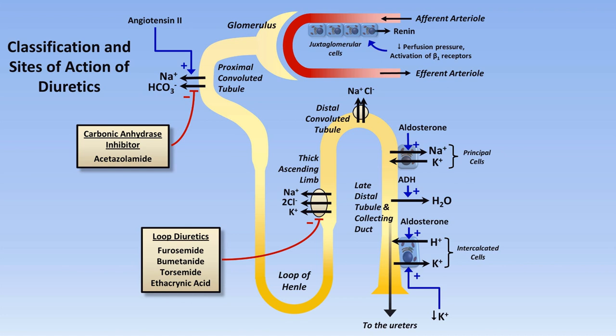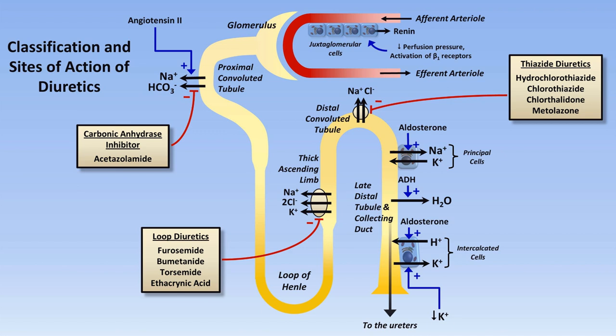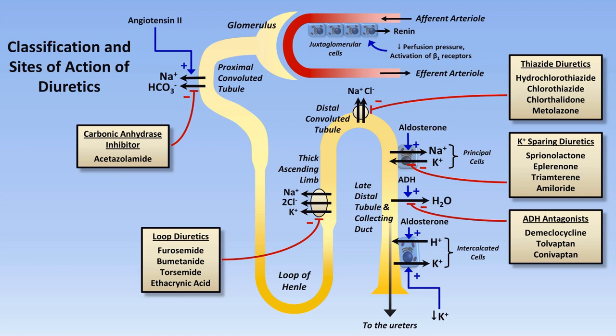The thiazide diuretics, like hydrochlorothiazide and metolazone, act in the distal convoluted tubule. And the so-called potassium-sparing diuretics, like spironolactone, block sodium reabsorption in the principal cells. In addition to meds that directly block sodium reabsorption, there are uncommonly used ADH antagonists that directly prevent reabsorption of water. And for the sake of completeness, mannitol is a unique diuretic that promotes water loss in the urine by acting as an osmotically active substance in the tubular lumen.